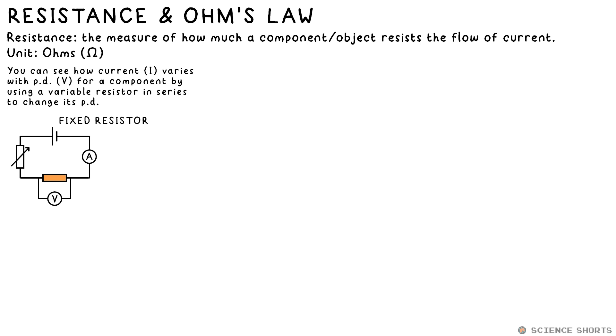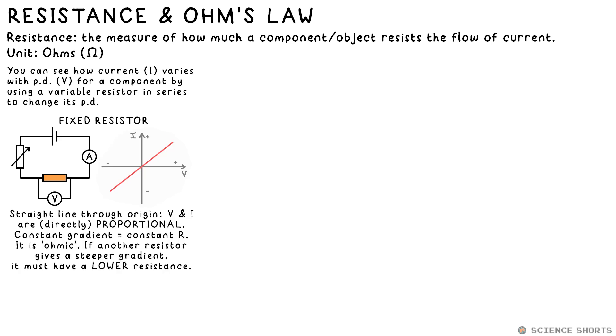If we make a circuit with a resistor and change the PD available to it, what we find is that an increasing PD results in a greater current flowing. In fact, doubling one doubles the other, so we can say that PD and current, or V and I, are directly proportional. Drawing a graph of these two makes a straight line, and if we turn the battery round, we can get negative values for both too, but still a straight line through the origin. This straight line has a constant gradient, and that shows that the resistor has constant resistance. We say it's ohmic. The steeper the gradient of this line, the lower the resistance of the resistor.